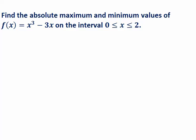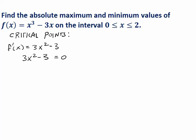Here's what we're going to do. Just like with relative maximum and minimum values, we're going to start by looking for critical points. So we take the derivative, which in this case is 3x² - 3. We set the derivative equal to 0.